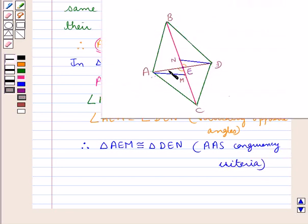Now that these two triangles are congruent, this implies that AE would be equal to DE by CPCT, as they are the corresponding parts of the congruent triangles, so they are equal.